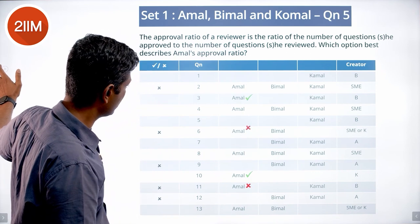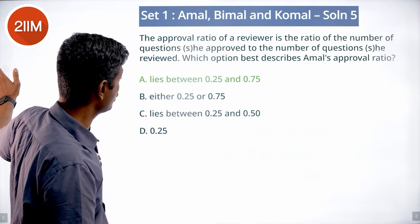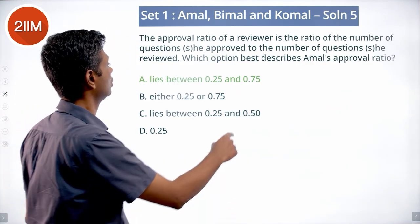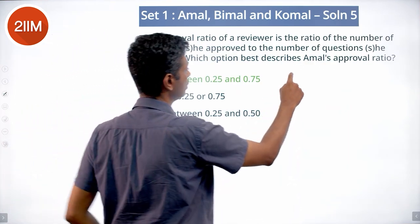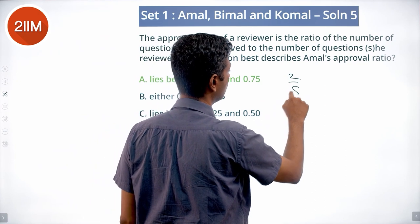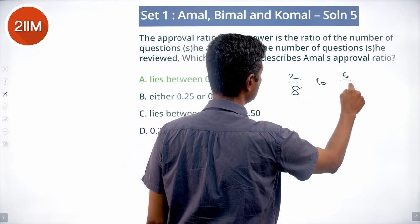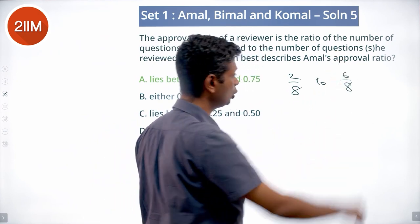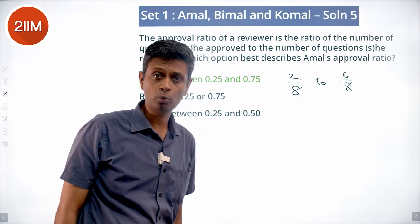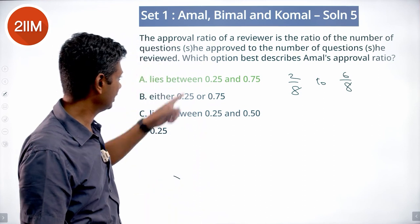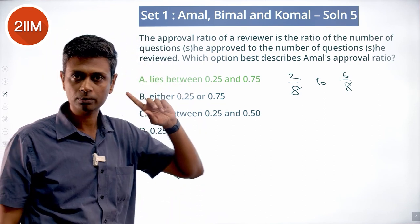The approval ratio ranges from 2 out of 8 to 6 out of 8, giving a range of 0.25 to 0.75. That is the range for Amal's approval ratio.